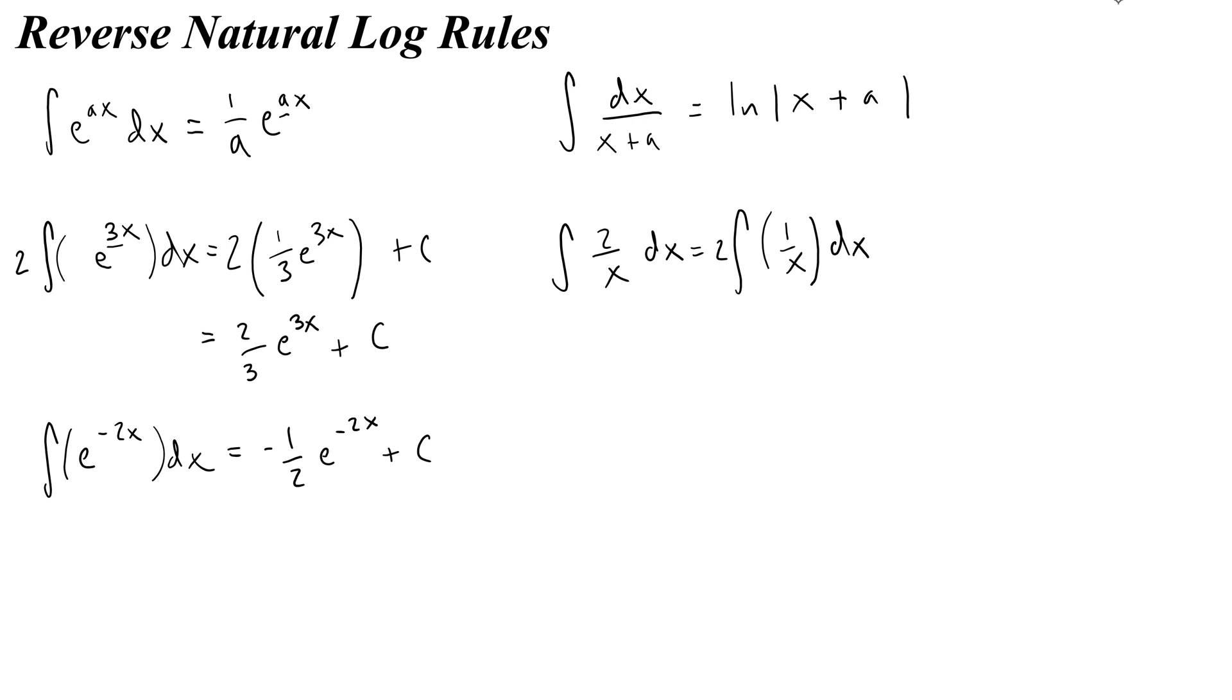So what I would do here is I would say a is 0, because it's like saying over x plus 0, and I would just write 2 times ln of x, or you know, 2 ln x.